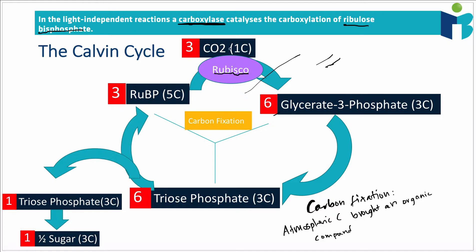When the cycle runs, three molecules of CO2 combine with three molecules of ribulose bisphosphate to give six molecules of glycerate 3-phosphate, the three-carbon product. The carbon count is consistent: three times one carbon is three, plus three times five carbons is fifteen, giving 18 carbons total, and six times three carbons is also 18. So carbon fixation uses CO2 and ribulose bisphosphate via rubisco to produce glycerate 3-phosphate.